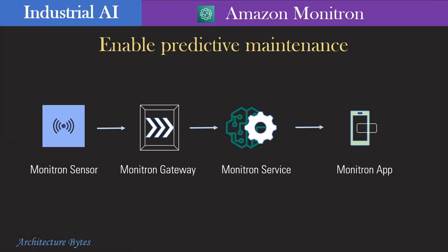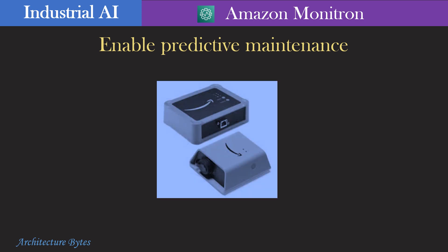Amazon Monitron is an end-to-end machine monitoring solution comprised of sensors, a gateway, and a machine learning service to detect abnormal equipment conditions that may require maintenance. Technicians can view the machine data on a Monitron app and provide feedback from which Monitron learns and improves system accuracy. It comes with wireless sensors that can be attached to your equipment, and the sensors send data to the Monitron gateway and from there it reaches the Monitron service.